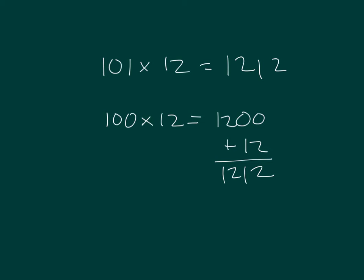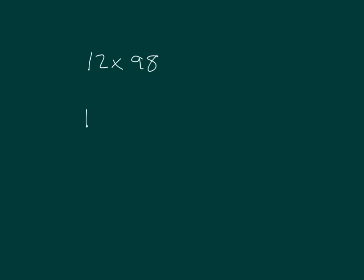Read the whole sentence with me. 101 times 12 equals 1,212. We can draw a bar model to represent this problem.